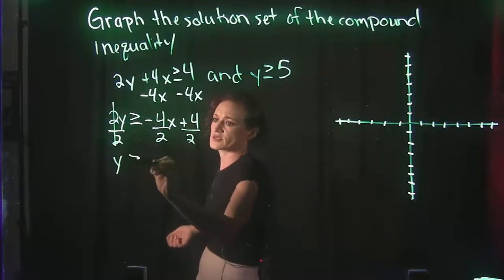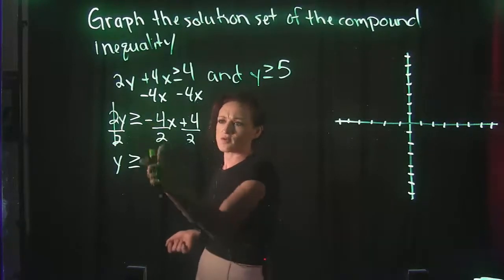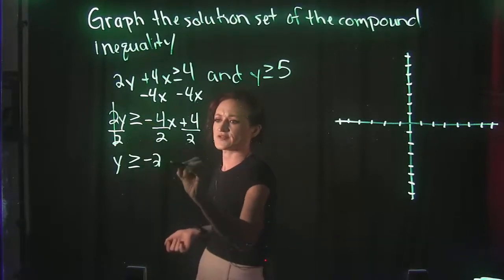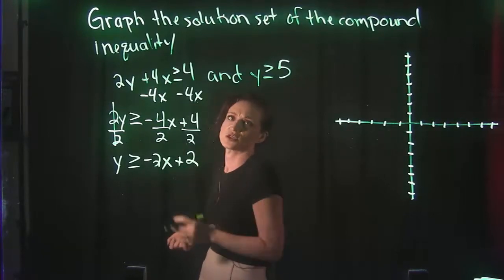So we're going to divide everything by 2. 2 over 2 cancels, leaving us with y is greater than or equal to negative 4 divided by 2 is a negative 2. And drop down the x. Plus 4 over 2 is 2.